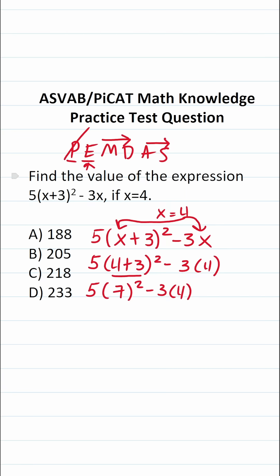Do we have any exponents? We do. We have 7 squared. 7 squared is the same thing as 7 times 7 which is going to be 49. So this becomes 5 times 49 minus 3 times 4.